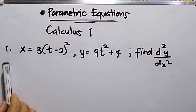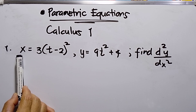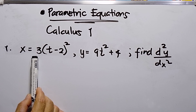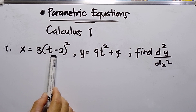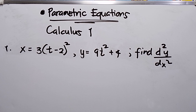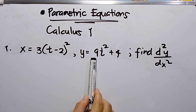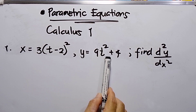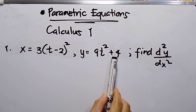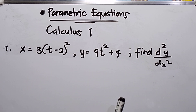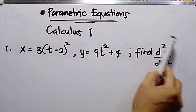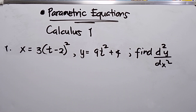So I have here number 1: x is equal to 3 times (t minus 2) to the power of 2. The second function is y is equal to 9t squared plus 4. The question is: find d²y over dx squared — meaning find the second derivative of the function.